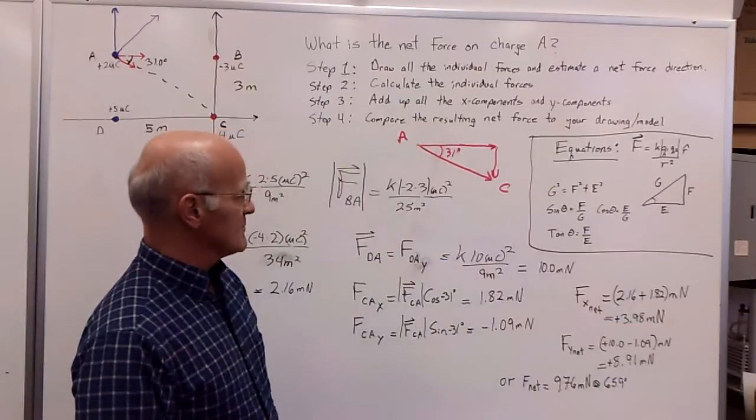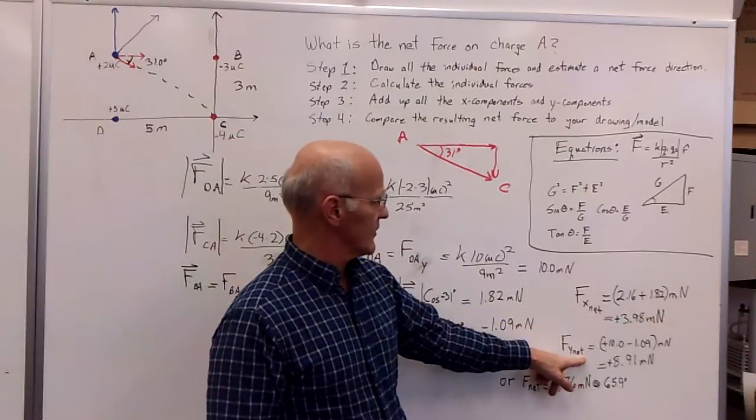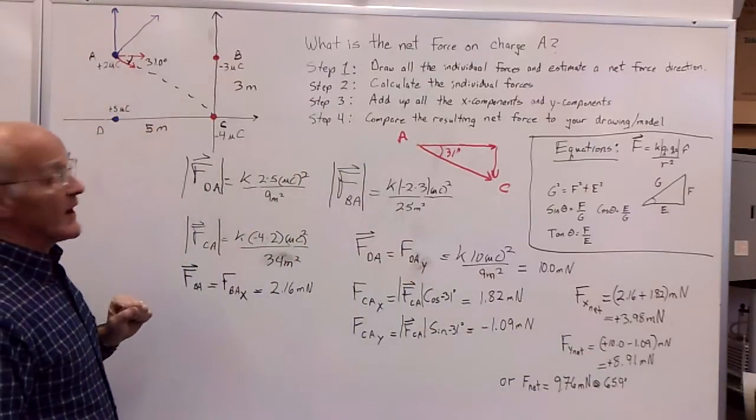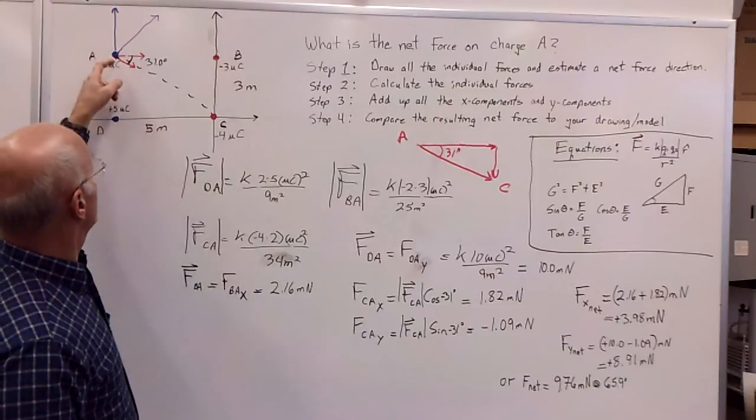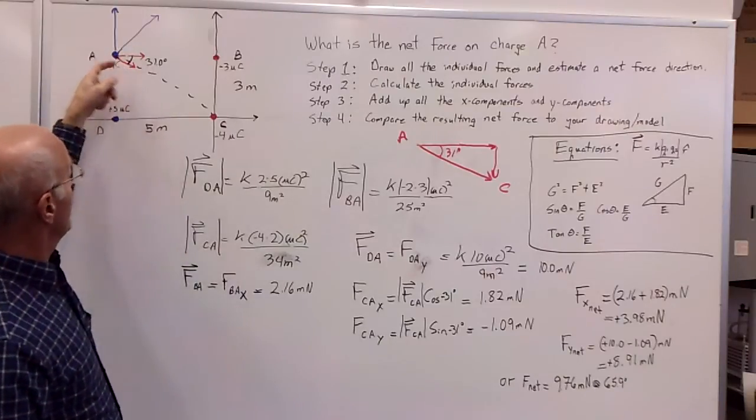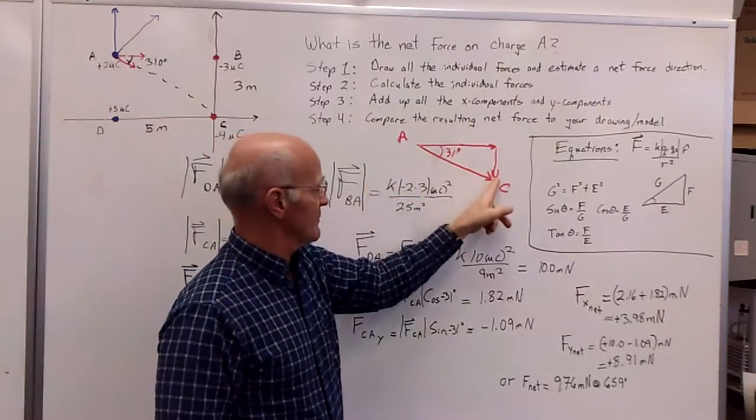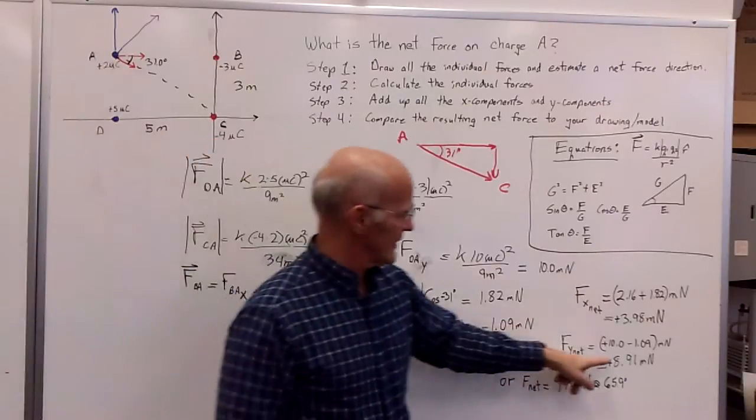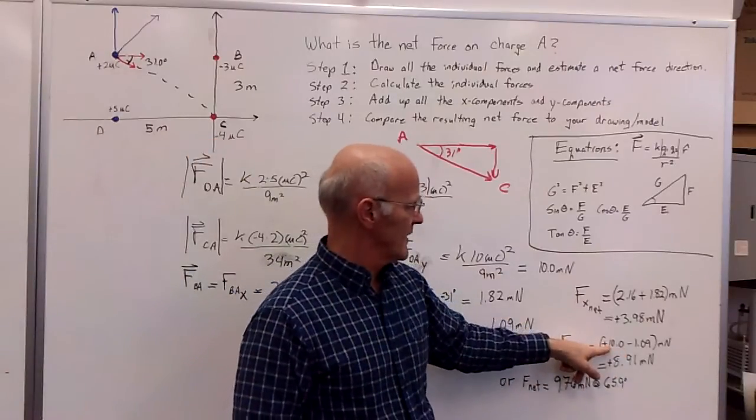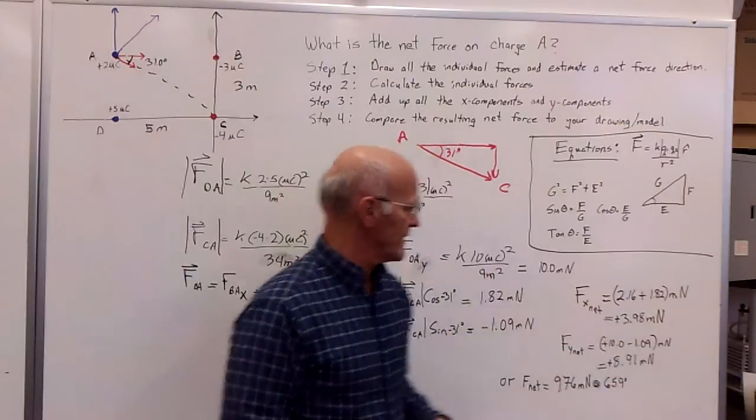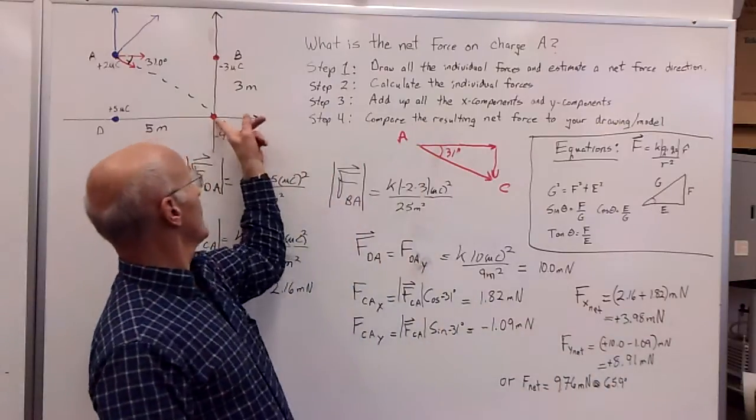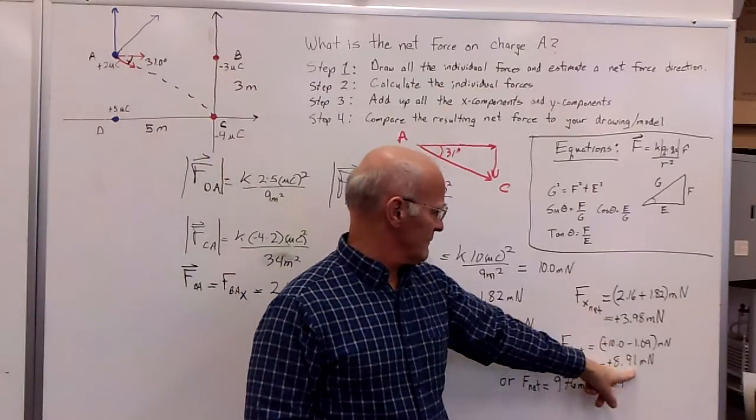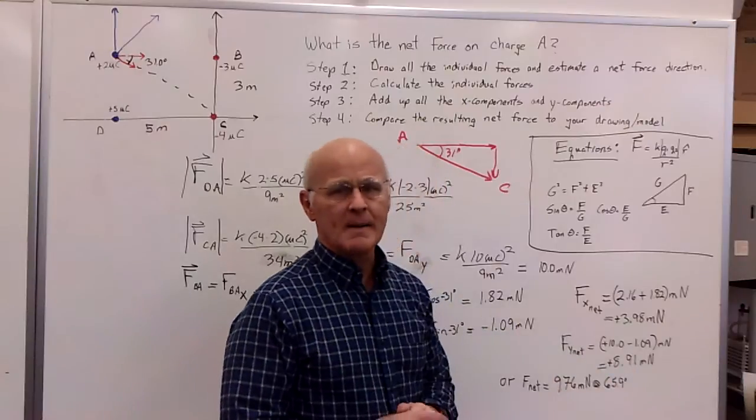Then I look at my Y component, and so the force in the Y direction, the net force then is going to be this positive 10 that I got from the blue interaction, and then I'm also going to have to take the negative Y component of the AC interaction, so I have to get this part and subtract that from there, and that's where I have this negative 1.09, so I take my 10 from the blue-blue, and I subtract my negative 1.09 from the blue-red interaction out of the corner, the lower right-hand corner, negative charge, and so that results in a magnitude of 8.91 millinewtons.